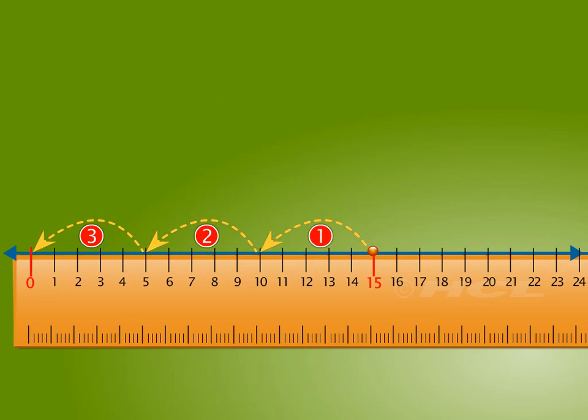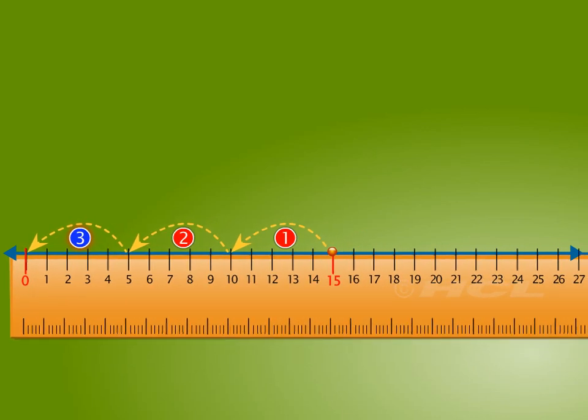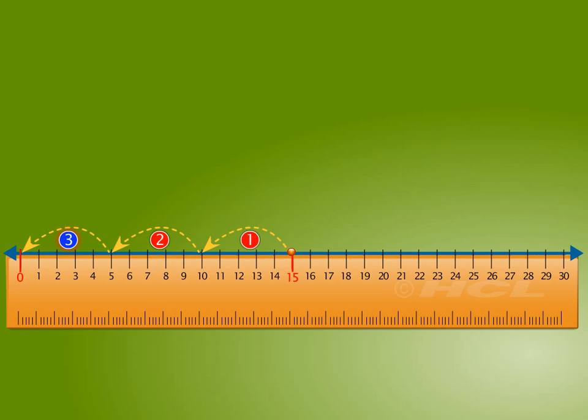Skip counting backwards by 5, we took 3 skips to reach 0 from 15. So, 15 divided by 5 is equal to quotient 3.